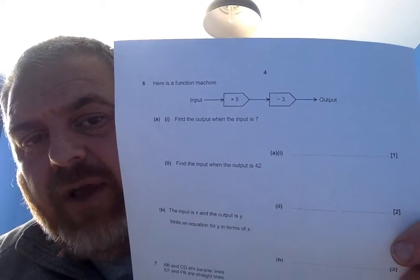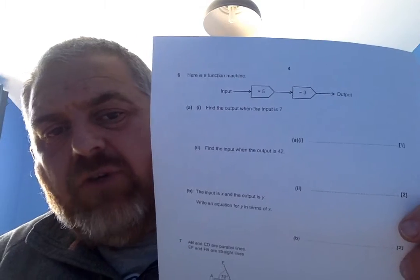So, question 6 is a function machine. Something times 5, your input times 5 minus 3 gives you your output. The first question says, find the output when the input is 7.